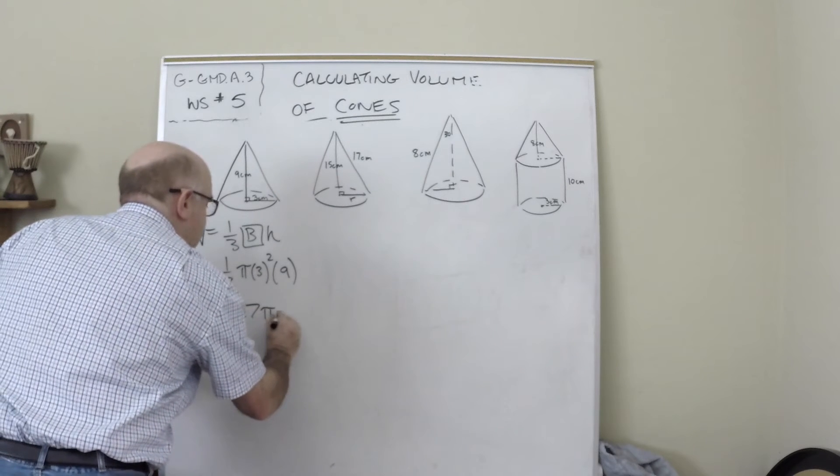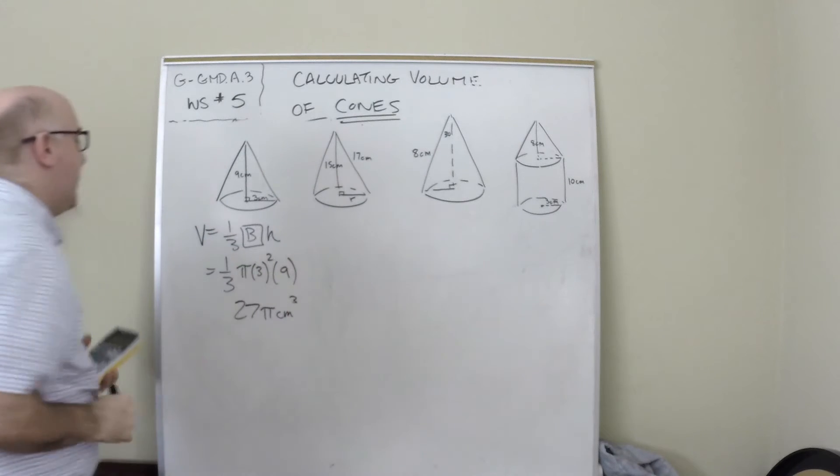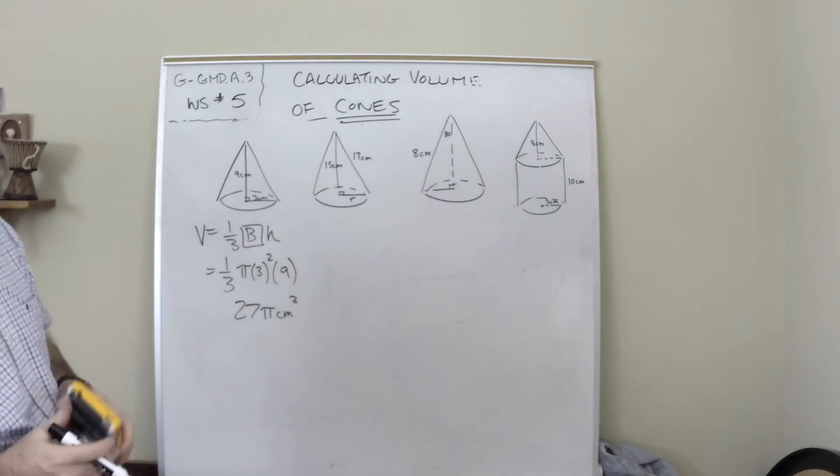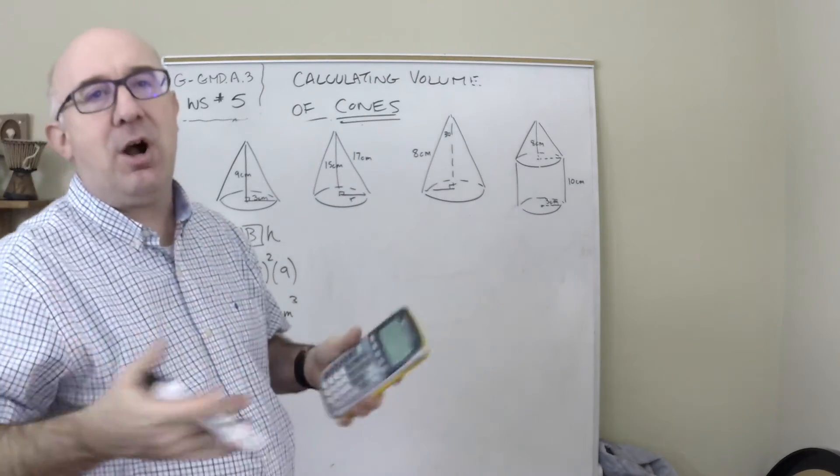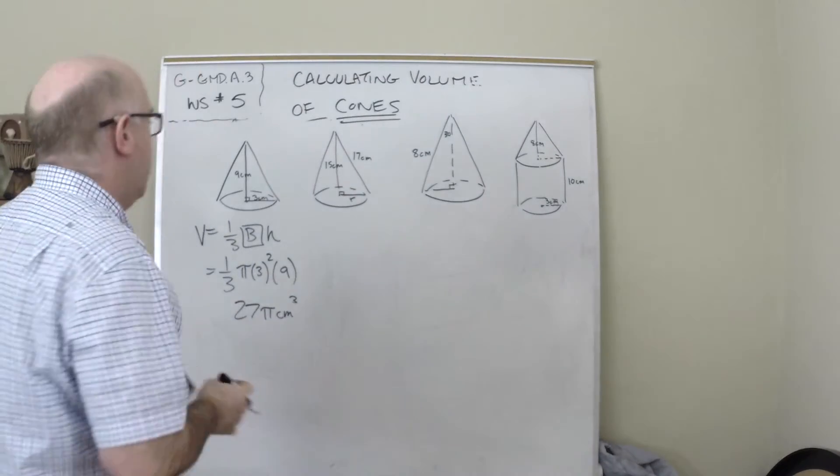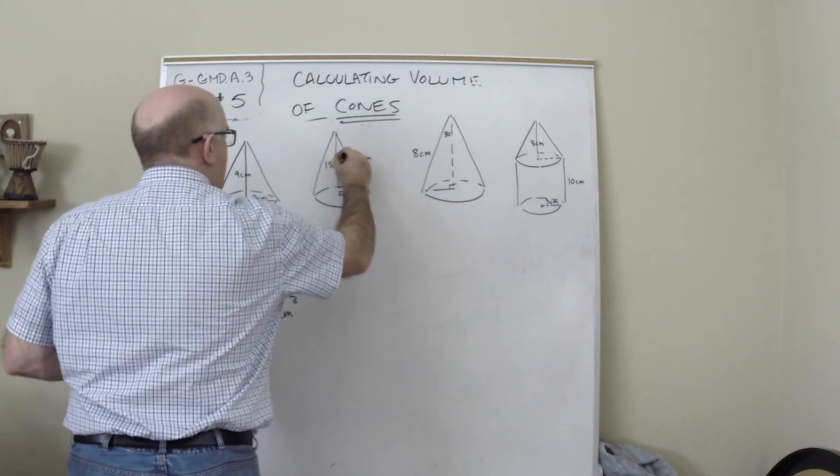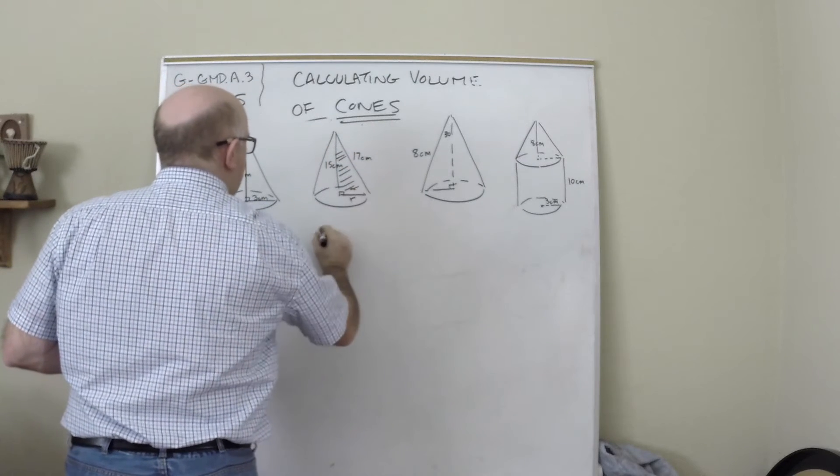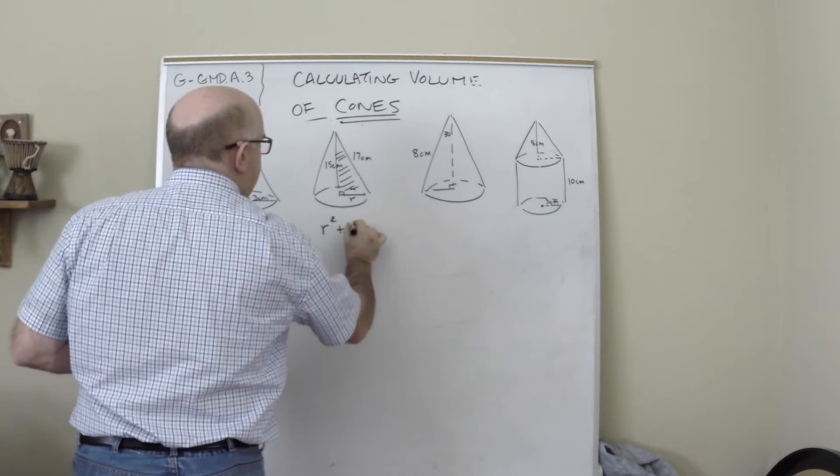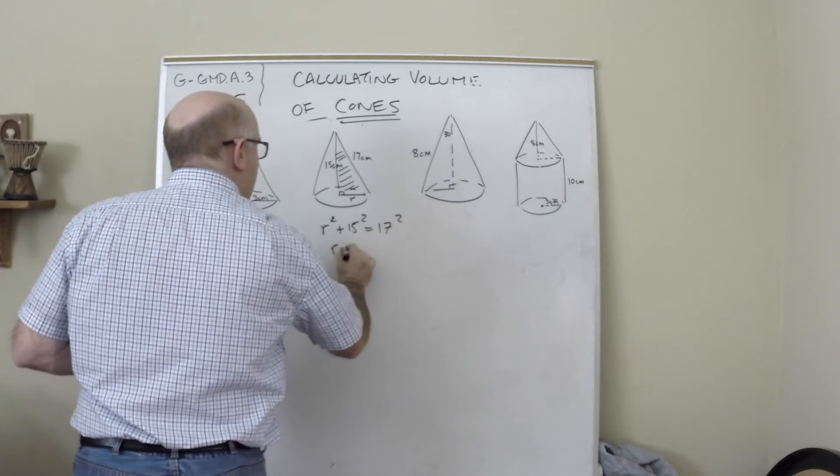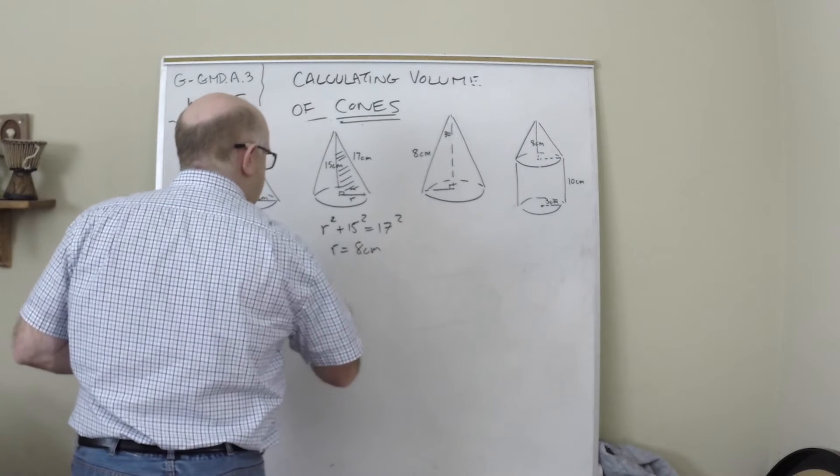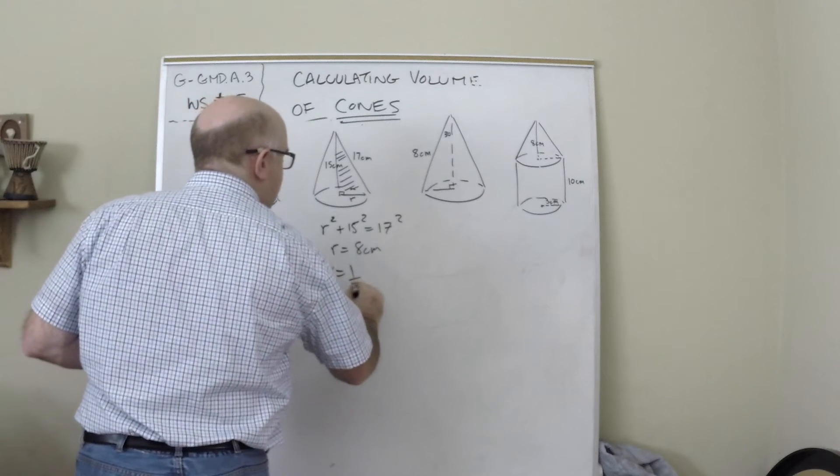The next one's missing - these are common little tricks I'm trying to show you. You notice this is a right triangle, so we would do r² + 15² = 17². With a little bit of math you get 8, so now we're ready to say volume is one-third Bh.